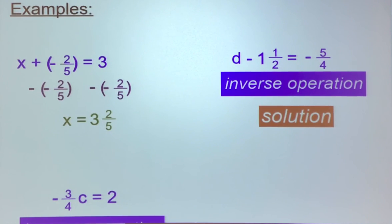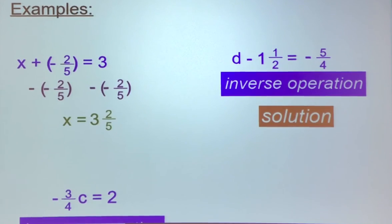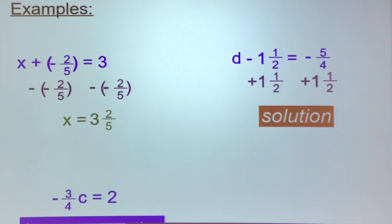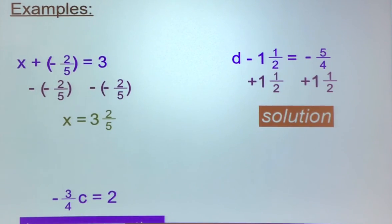On the right side: d minus 1 and 1/2 equals negative 5/4. They're subtracting 1 and 1/2 from d, so the inverse is to add 1 and 1/2 to both sides. On the side with the variable, they cancel out, leaving just d. On the other side, negative 5/4 plus positive 1 and 1/2, following integer rules, gives us d equals 1/4.